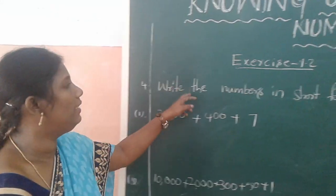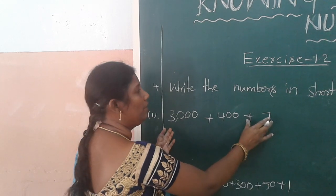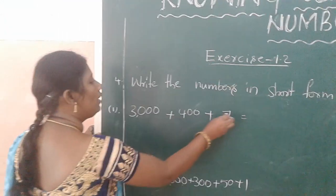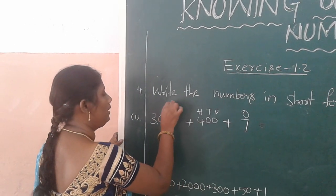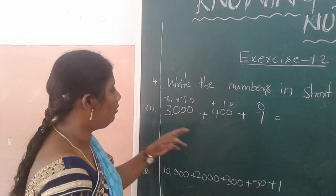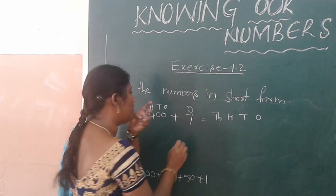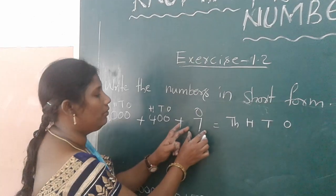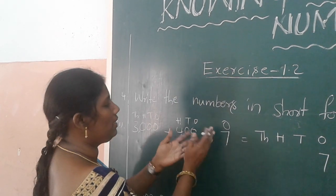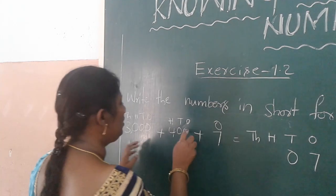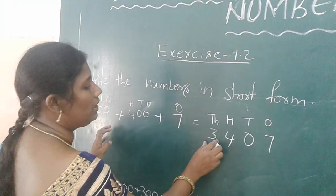Now go to the next model: write the numbers in short form. The expanded number is 3,000 + 400 + 7. Take place values: ones, tens, hundreds, thousands. Ones place: 7. Tens place: 0 (no tens). Hundreds place: 4. Thousands place: 3. So the short form is 3,407.